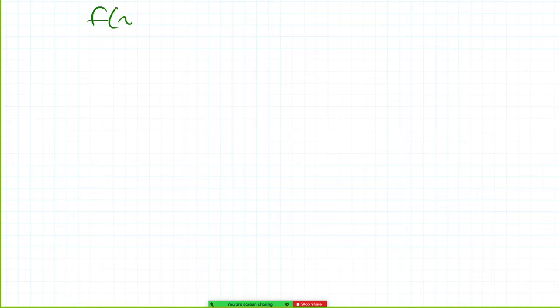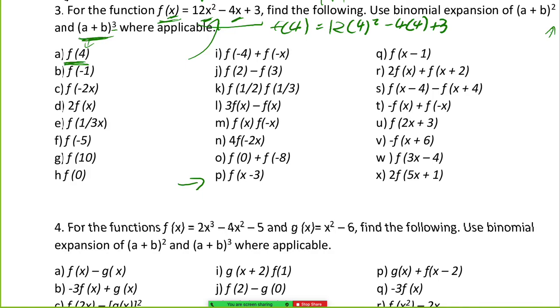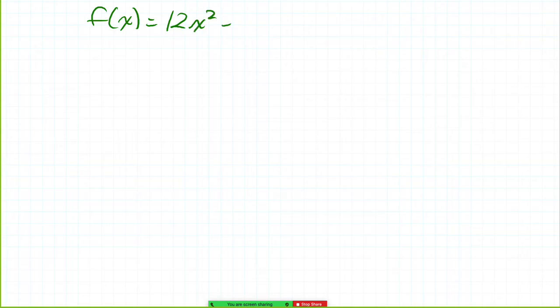f(x) is equal to—so I'm going to jump back and forth because I think it will help—12x² - 4x + 3. So what does that mean? Well, we write f(4), we get 12(4)² - 4(4) + 3. So we're kind of jumping through this quickly. We just have to equate everything.